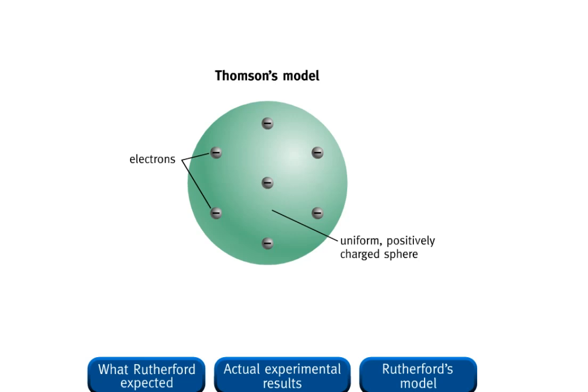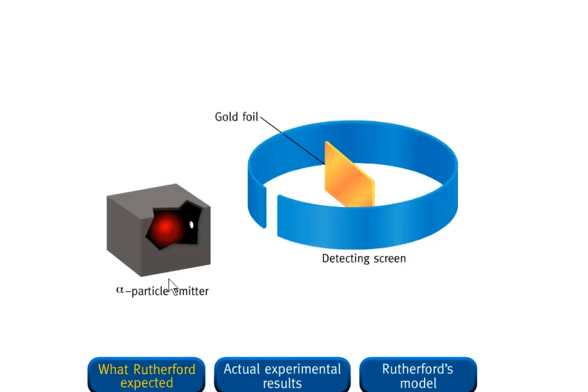In 1910, Ernest Rutherford, Hans Geiger, and Ernest Marsden carried out experiments firing alpha particles at very thin gold foil. Based on Thomson's model, Rutherford expected that the positively charged alpha particles should pass through the uniform sphere of positively charged matter with little or no deflection.